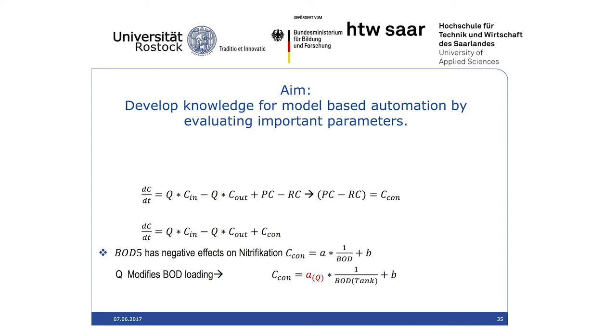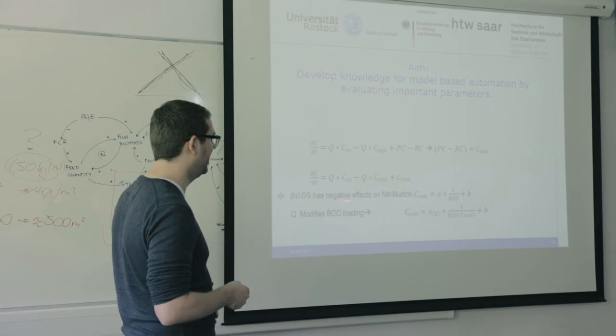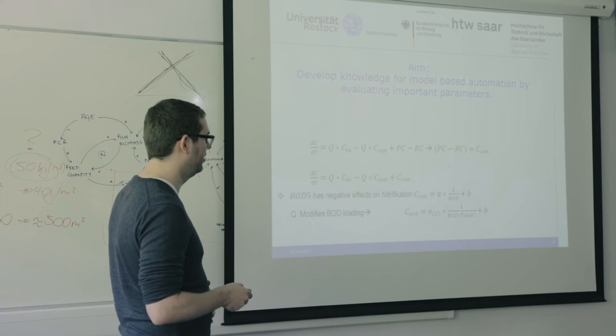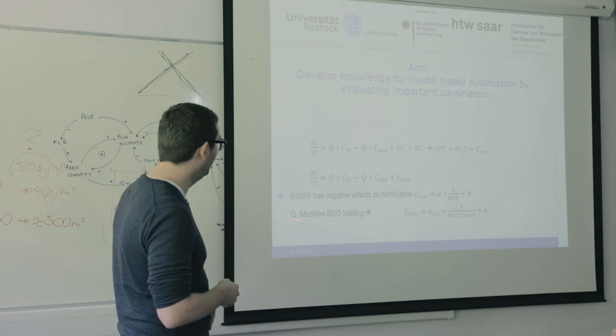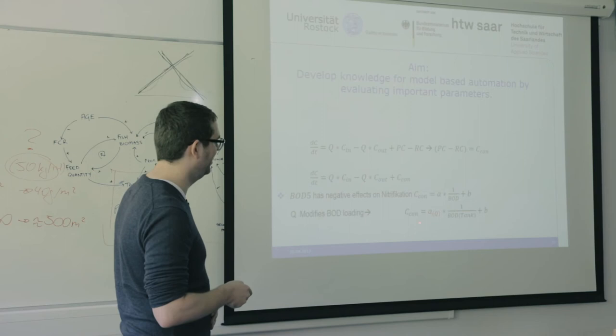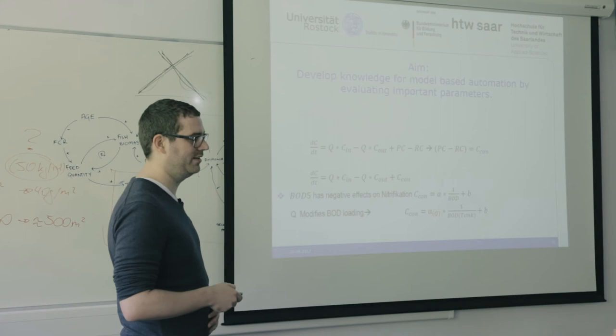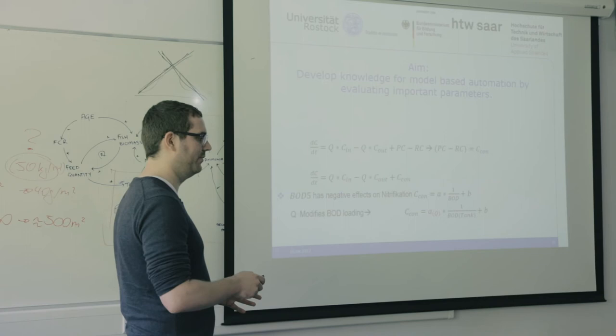This is the formula for the tanks — I will introduce them later again. We have biological oxygen demand in our water coming from the fish and it has negative effects on denitrification. So if this is the formula for denitrification — a really simple one — we would have a 1/BOD factor, so the more BOD we have the worse it gets. We also have Q, the flow-through, giving us a flow-through-dependent nitrification rate because we have BOD in it.